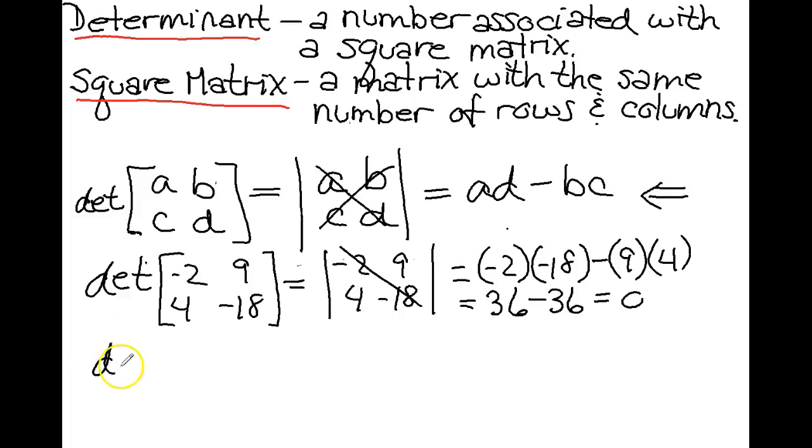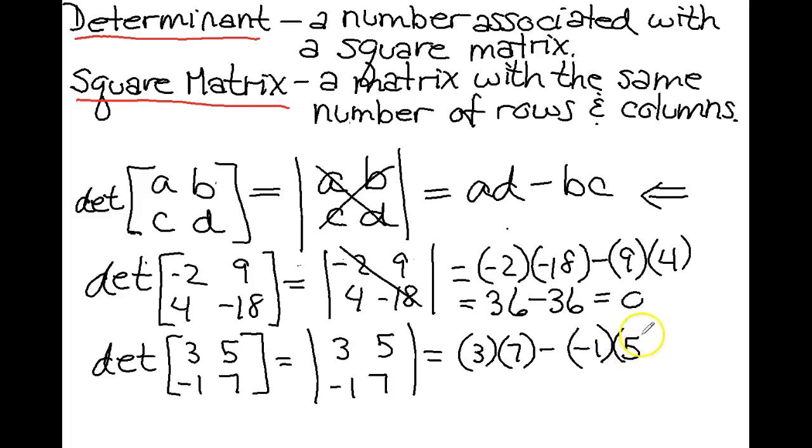Let's do another example. The determinant of 3, 5, negative 1, and 7. That can also be written as the determinant of 3, 5, negative 1, and 7, which equals 3 times 7 minus negative 1 times 5, which is 21 plus 5, which is a total of 26.